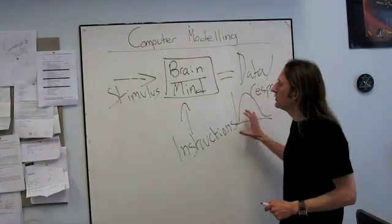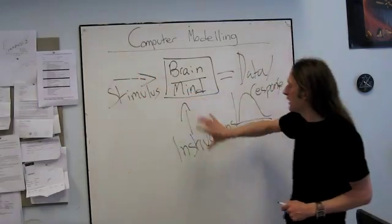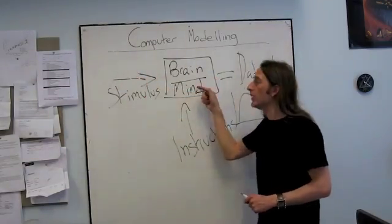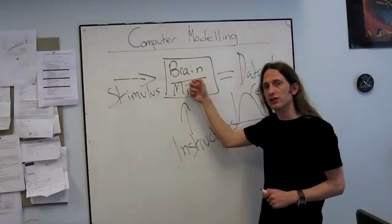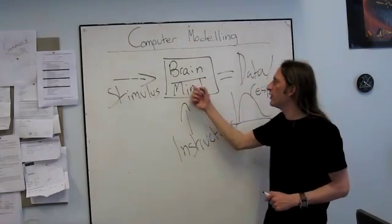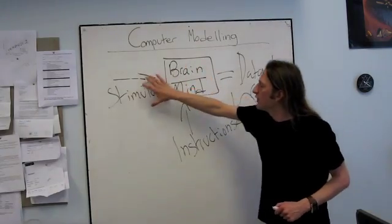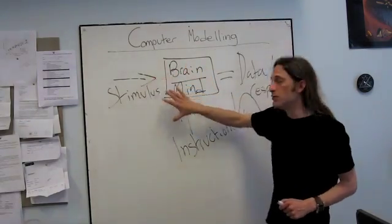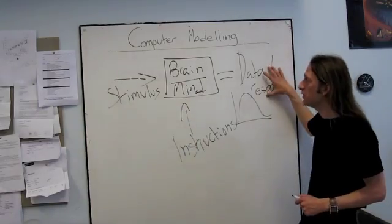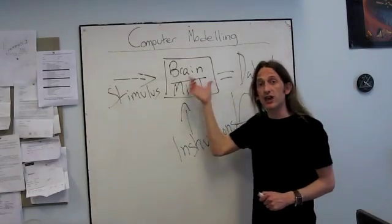So what I want to do is, by taking this and this and this, infer something about what function is going on inside here. What function is working on this stimulus and working on the instructions to produce the data, and how good is that functioning.